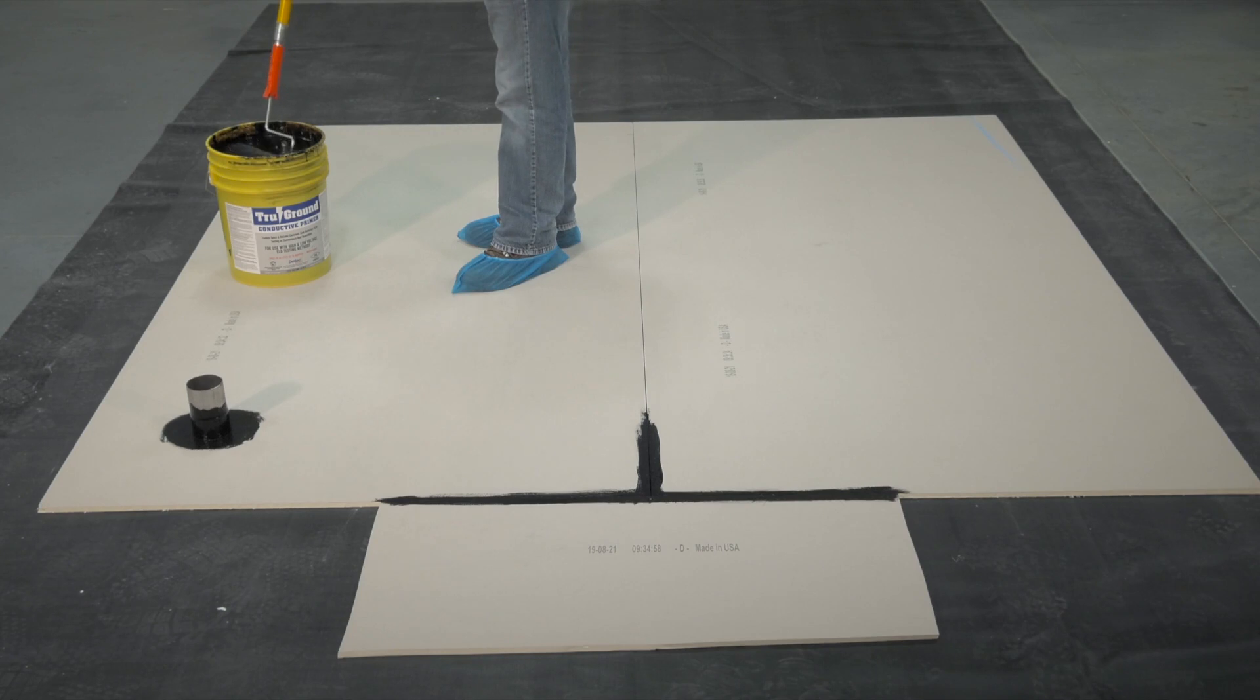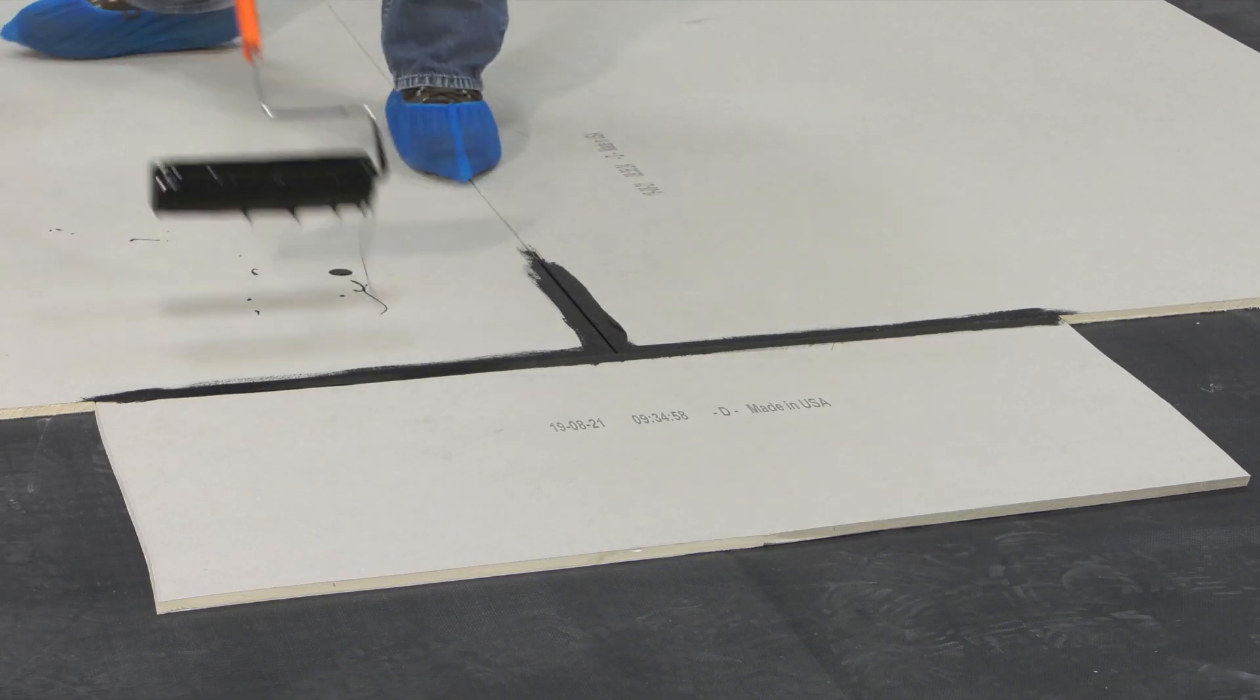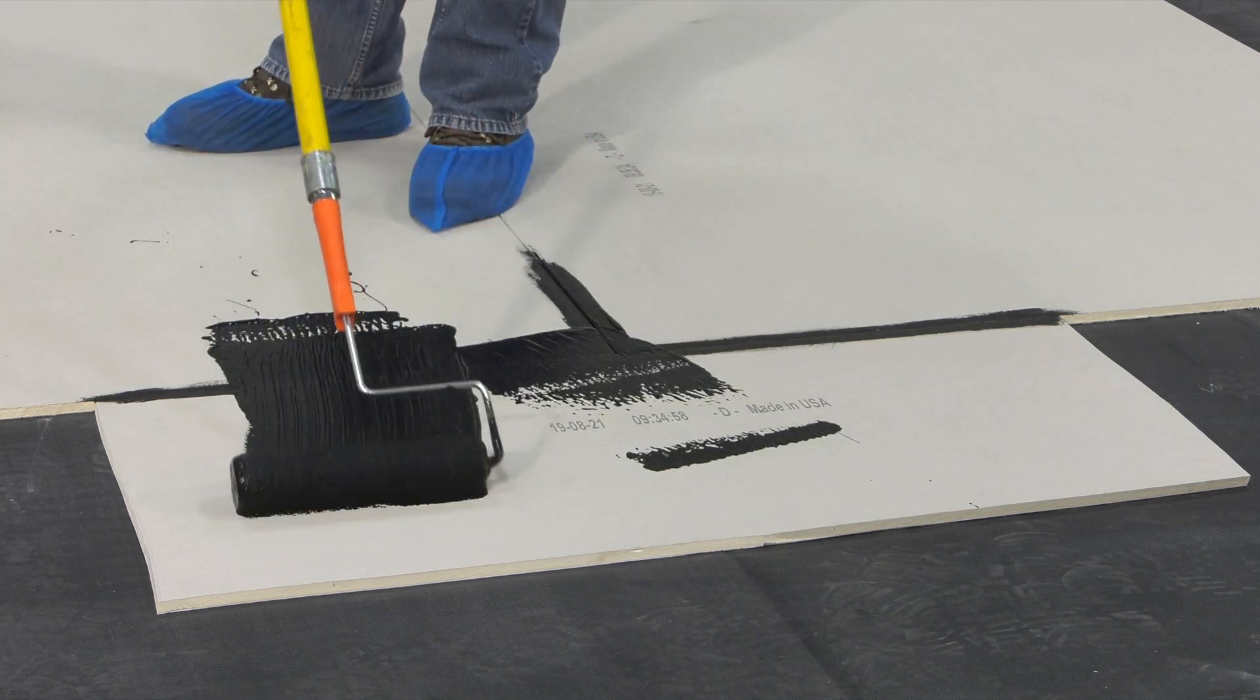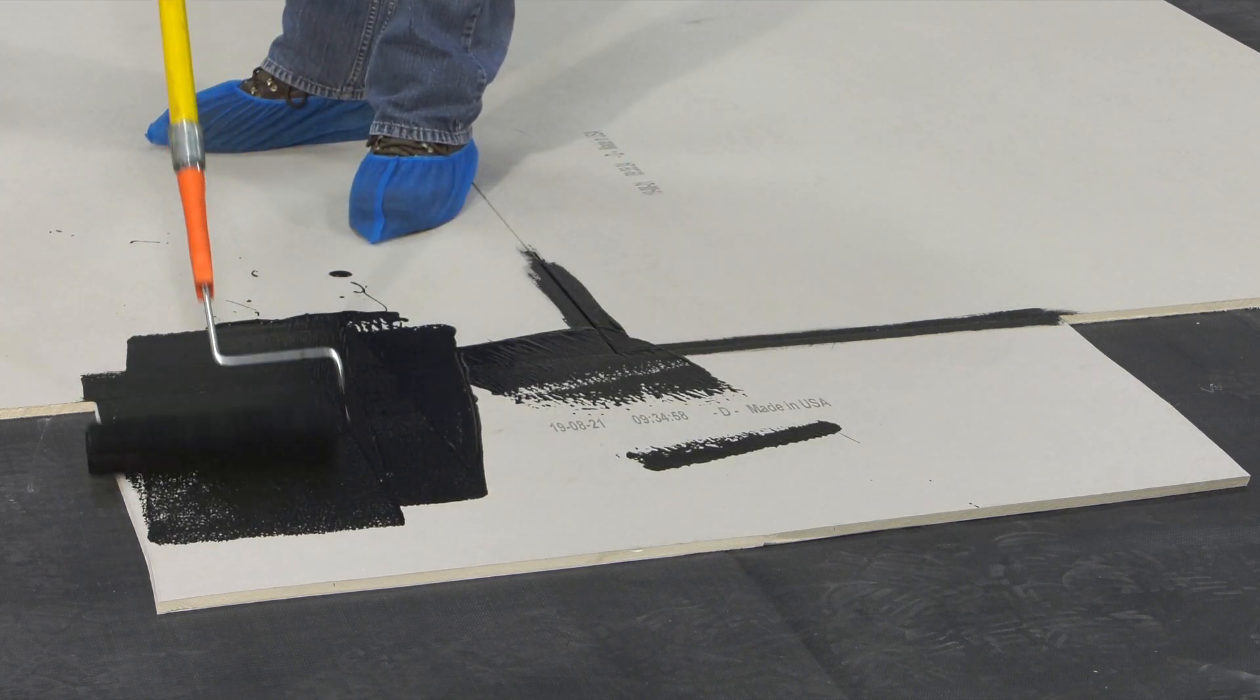Next, using a 3/8-inch nap roller, dip the roller into the True Ground and continue to apply a thin coat over the entire substrate board. The substrate should not be visible through the True Ground.